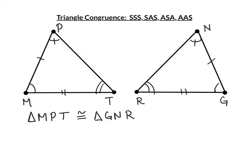Looking at the angles with the slash and the double mark, we can tell those two sides correspond. And of course, we can always look at the statement and see that MP and GN are congruent segments, that PT and NR are congruent segments, and that the outside segment MT would be congruent to segment GR.